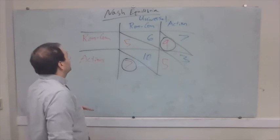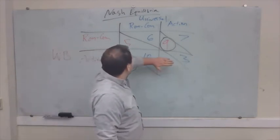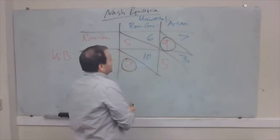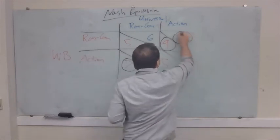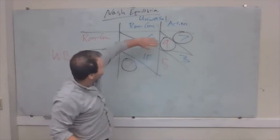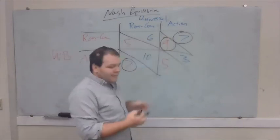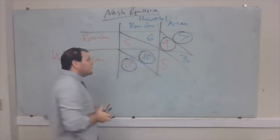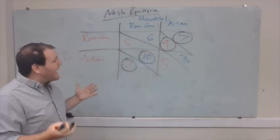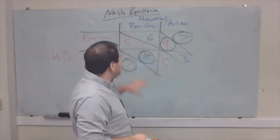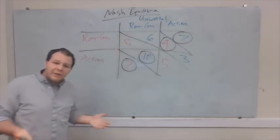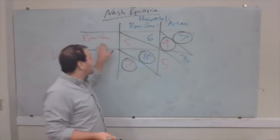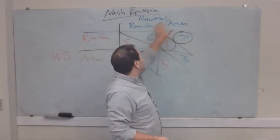How about if I'm Universal? If I know Warner Brothers is going to make a rom-com, I'm better off making an action movie — 7 is higher than 6. But if I know Warner Brothers is going to make an action movie, I'm better off making a rom-com, because 10 is better than 3. So in this case, we again have two Nash Equilibria. We can't say for sure whether Warner Brothers will make an action or a rom-com, or whether Universal will make an action or a rom-com.